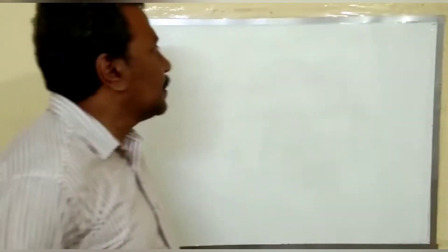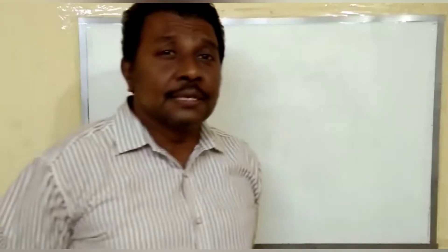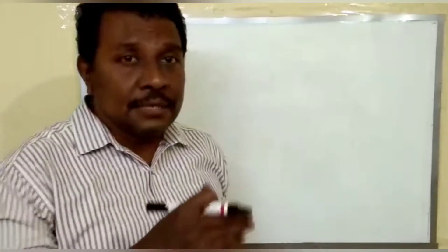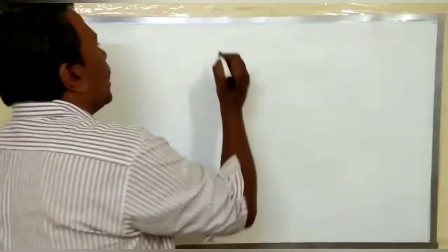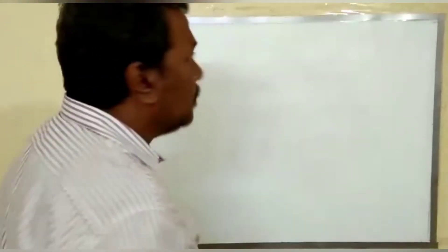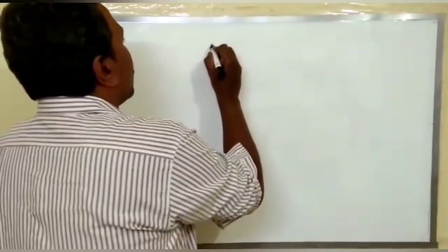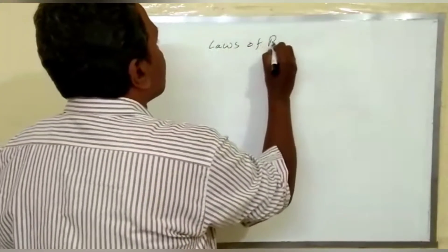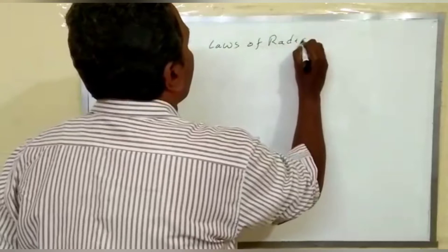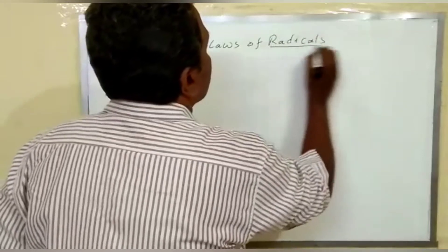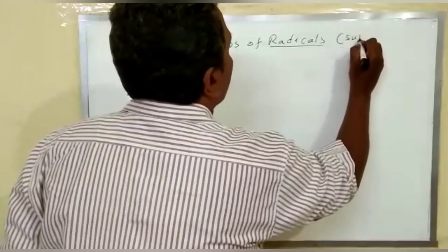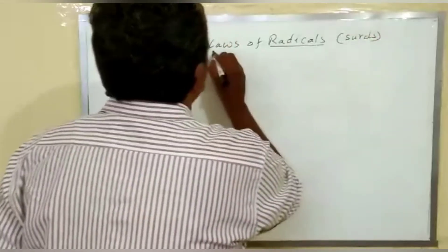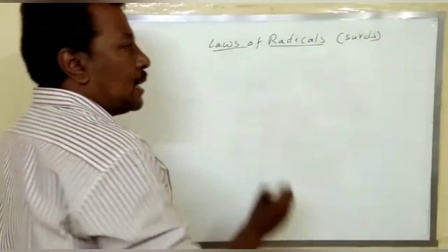Welcome to Prevent Tutorials. This is Deepak Mathematics. In the previous class we had discussed about some laws of radicals, and we will discuss some more about it. We discussed up to the third law. Radicals can also be called as surds.